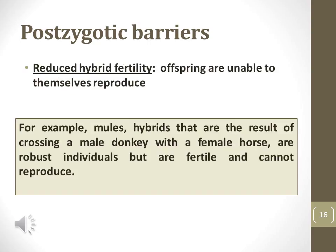Reduced hybrid fertility occurs when offspring of different populations are infertile and cannot reproduce. Mules, the offspring of donkeys crossed with horses, cannot reproduce because of reduced hybrid fertility.